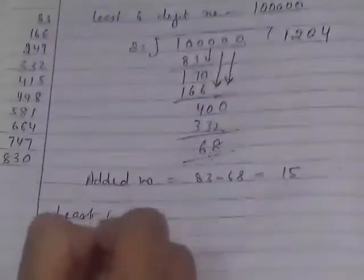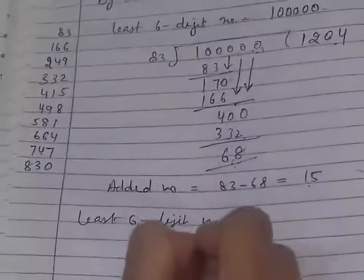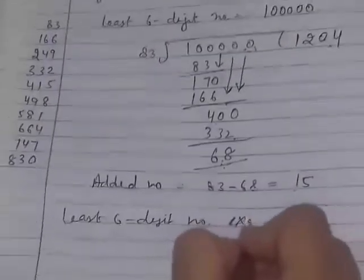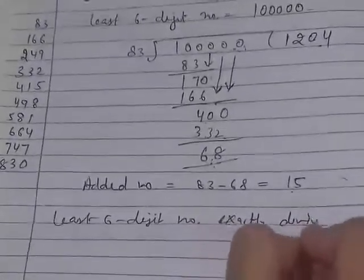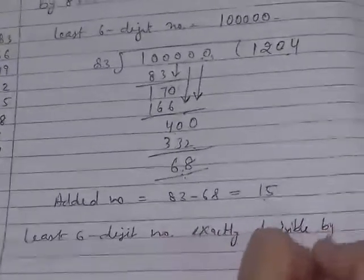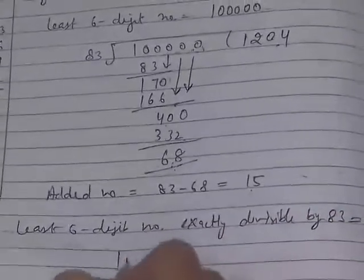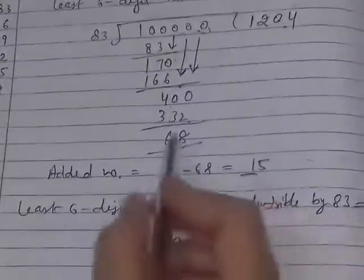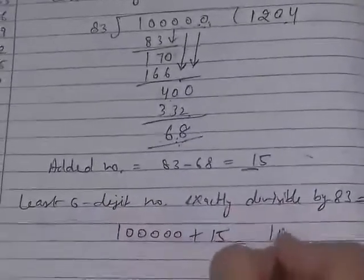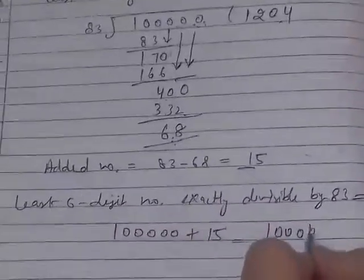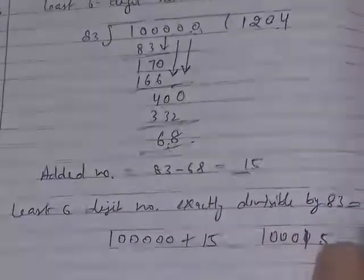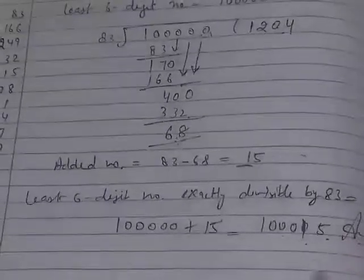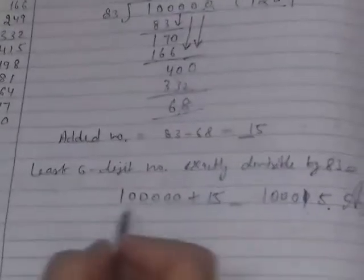So the least 6 digit number exactly divisible by 83 is 100000 plus this added number 15, which equals 100015. This is your least 6 digit number which is exactly divisible by 83. No need to show division now. Next question number 15.